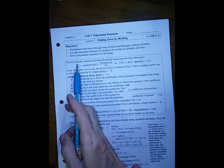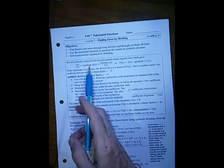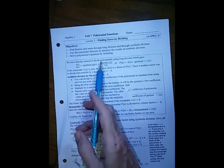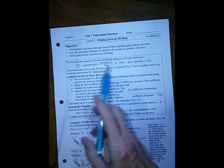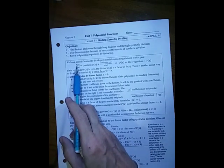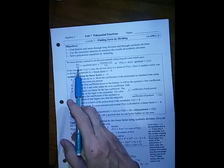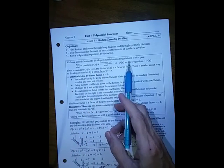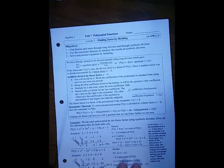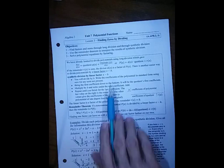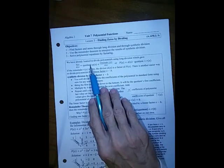We already know that when we divide polynomials, we get a quotient polynomial and the remainder polynomial over the divisor. If we multiply both sides by the divisor, we can write it as the quotient times the divisor plus the remainder. If the remainder polynomial is zero, that means the divisor d(x) is a factor and the quotient is also the other factor.